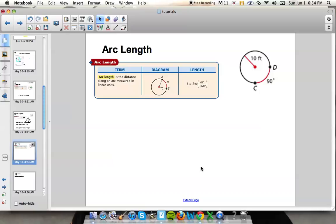So to find arc length we are going to take our 3.14 multiply it by 2 and then we're also going to multiply that by the radius which is 10. Then we are going to take our arc length which is 90 and divide it by 360. And that's how you find your arc length.